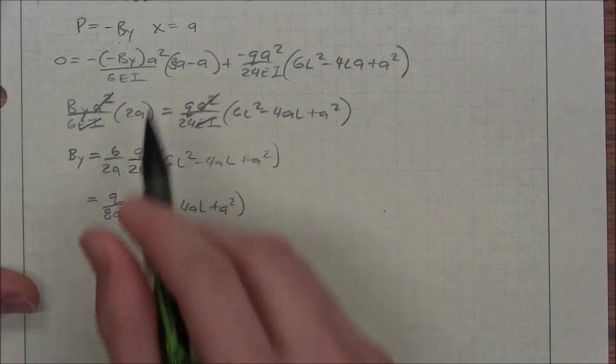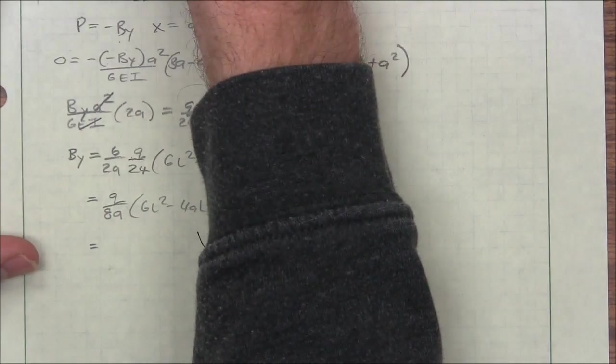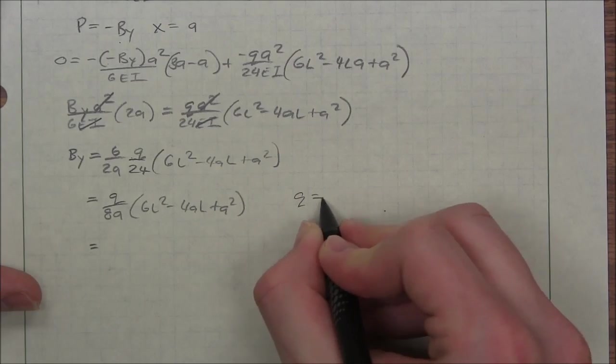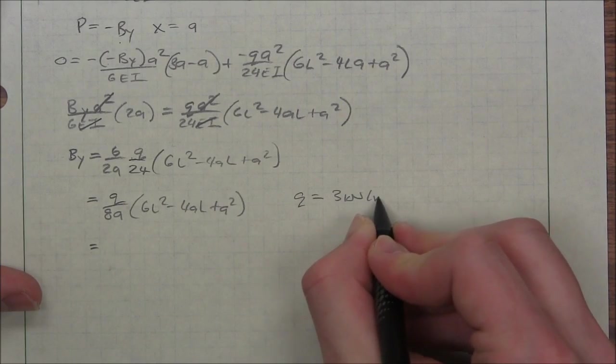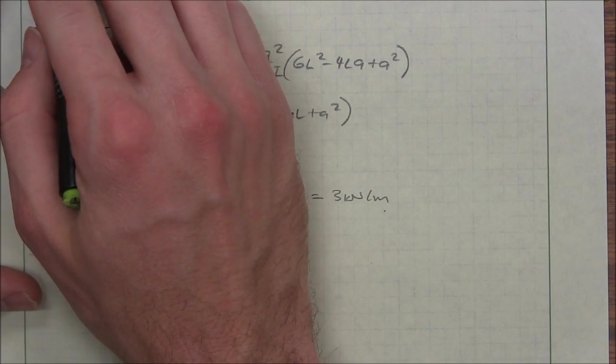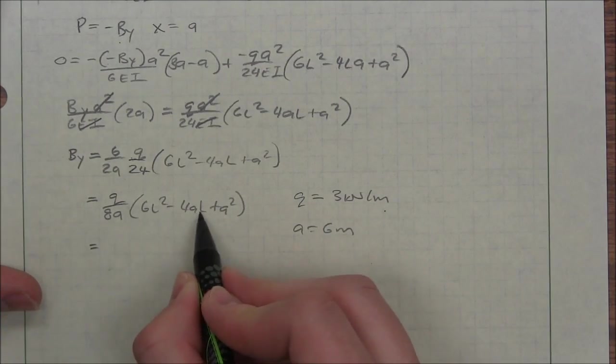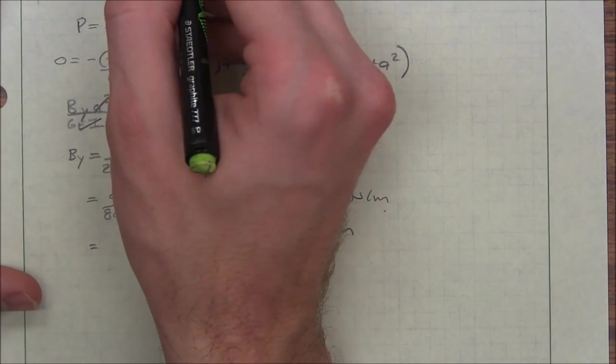So keep in mind, Q is our distributed load and I forgot to write it on this one, but it was 3 kN per meter. Write that over here, 3 kN per meter. A is the distance between left end and our load, which was 6 meters. L is the total span, which is 8 meters.